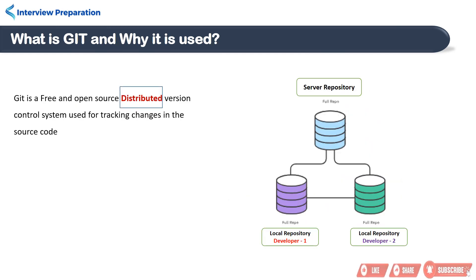Distributed means Git has a remote repository which is stored in a server, and a local repository which is stored in the computer of each developer. This means the code is not just stored in a central server, but the full copy of the code is present in all the developers' computers. Git is a distributed system because the code is present in every developer's computer.